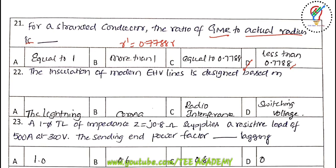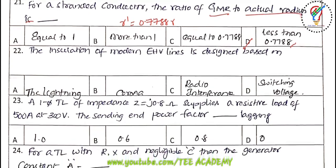Twenty-second question: the insulation of modern EHV lines is designed based on switching voltages — not corona, not lightning, and not radio interference. The answer is D.